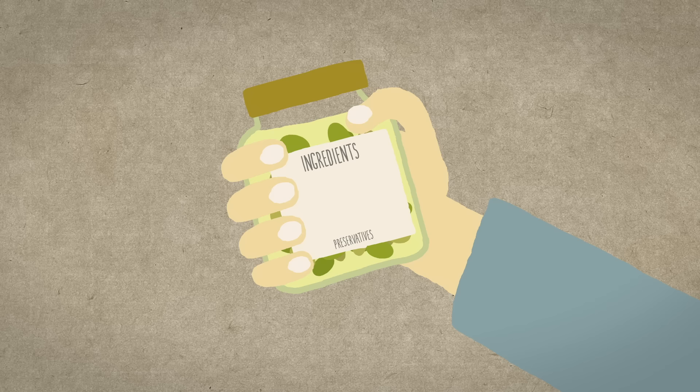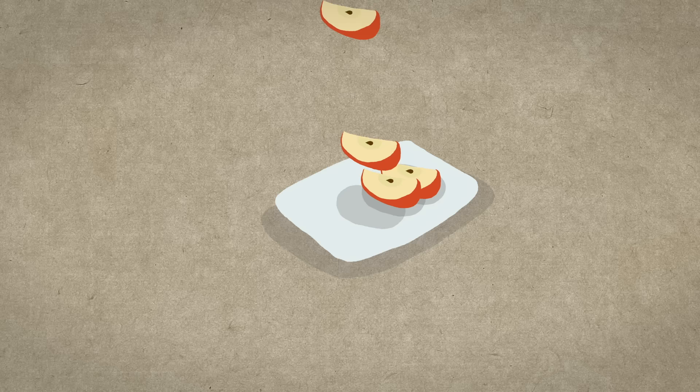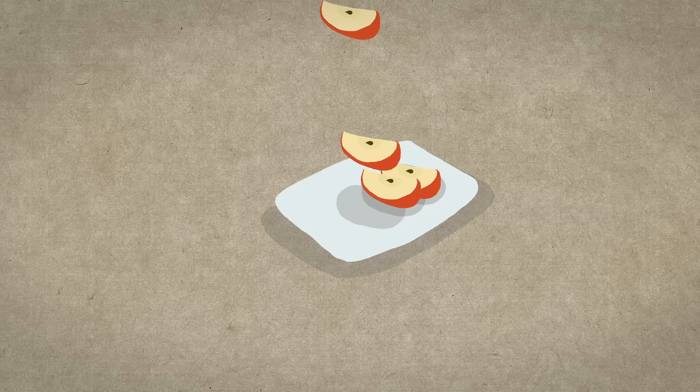So should you be worried about preservatives? Well, they're usually near the end of the ingredients list because they're used in very small amounts, determined by the FDA to be safe. Nevertheless, some consumers and companies are trying to find alternatives. Packaging tricks like reducing the oxygen around the food can help, but without some kind of chemical assistance, there are very few foods that can stay shelf-stable for long.